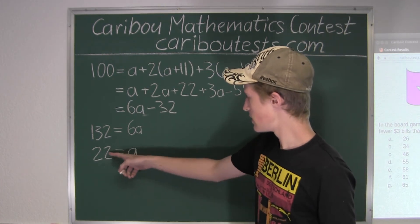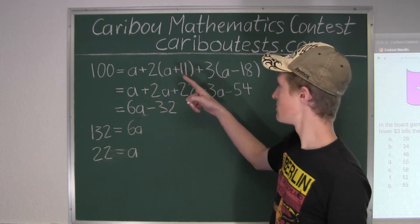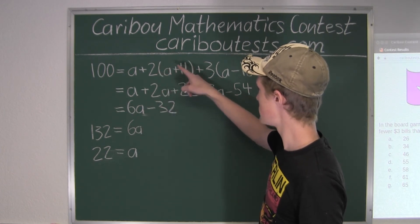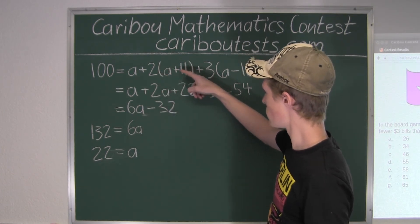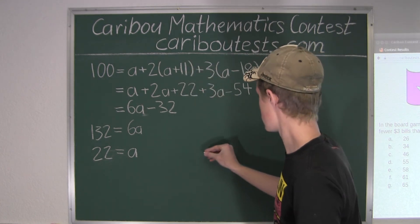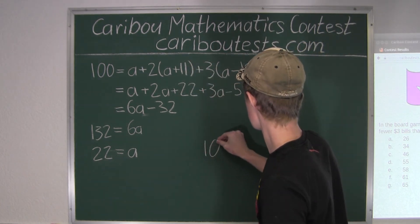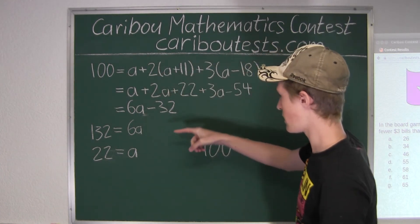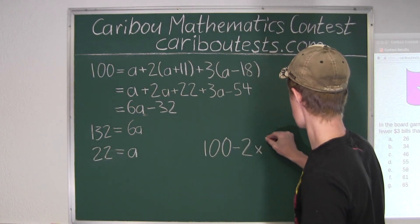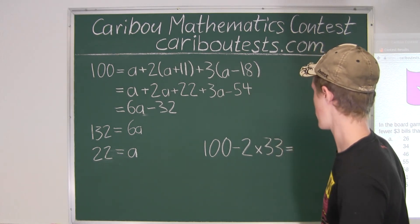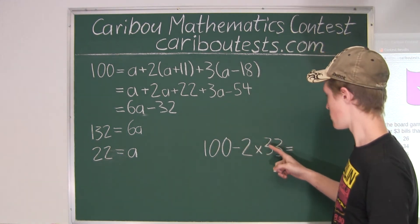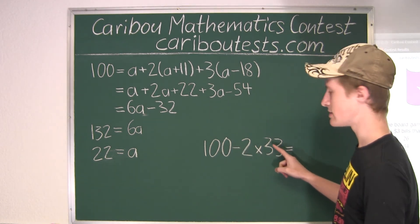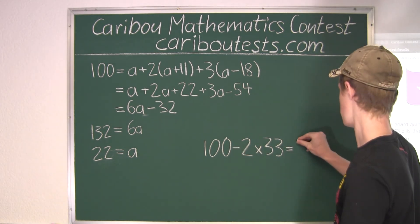Now we will put A equals 22 into here. We have 2 times, in brackets, 22 plus 11, that's 33, so we have 100 minus 2 times 33. 2 times 33 is 66, 100 minus 66 equals 34.